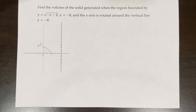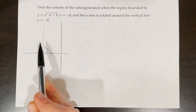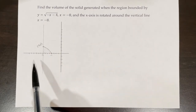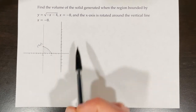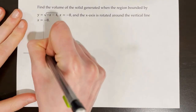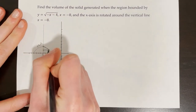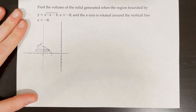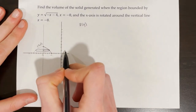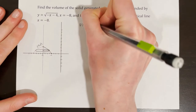Find the volume of the solid generated when the region bounded by y equals the square root of negative x minus 4, x equals negative 8, and the x-axis is rotated around the vertical line x equals negative 8. Sketch out all the functions. It's rotated around a vertical line, so sketch the other side and one radius — in this case the radius is horizontal. We'll find r of y because the disk is perpendicular to the y-axis and we're rotating around a vertical line.